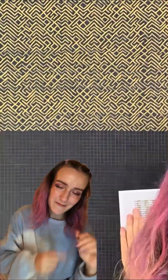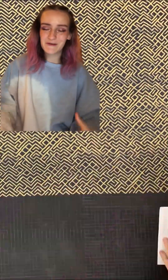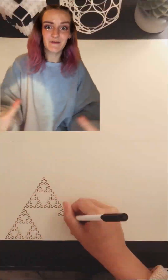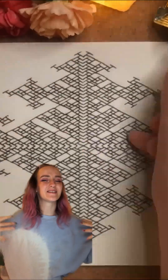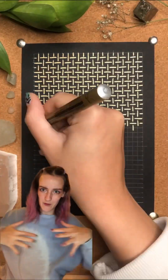A is for algorithm. I want to do an A to Z of maths art, and what better place to start than algorithmic art, which is where you decide a set of rules and then just let the beauty follow.